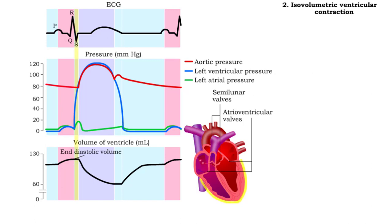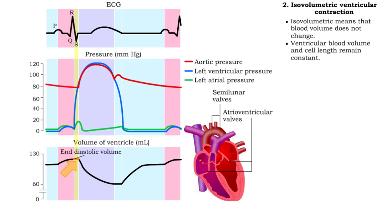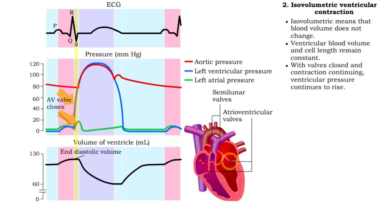Ventricular contraction is at first isovolumetric. This means that ventricular blood volume and muscle cell length do not change. Contraction causes ventricular pressure to rise above atrial pressure, forcing the AV valves shut. With the valves closed, the continuing contraction increases ventricular pressure.